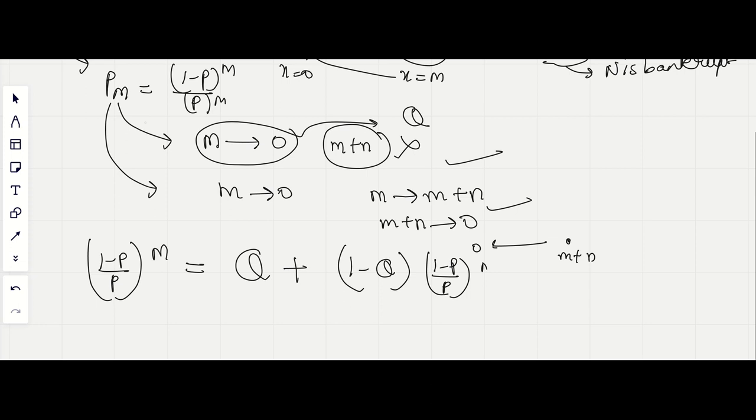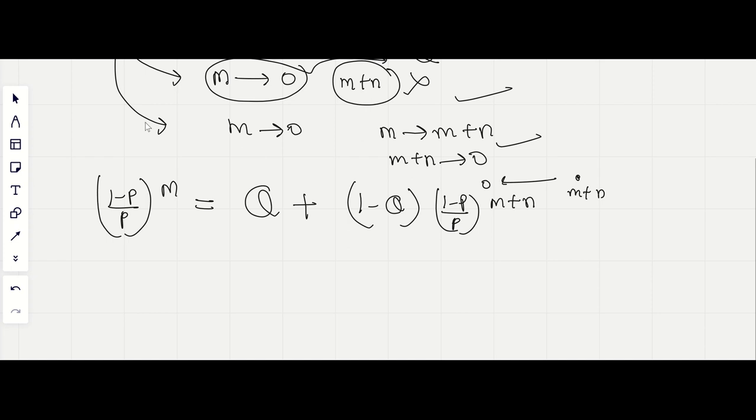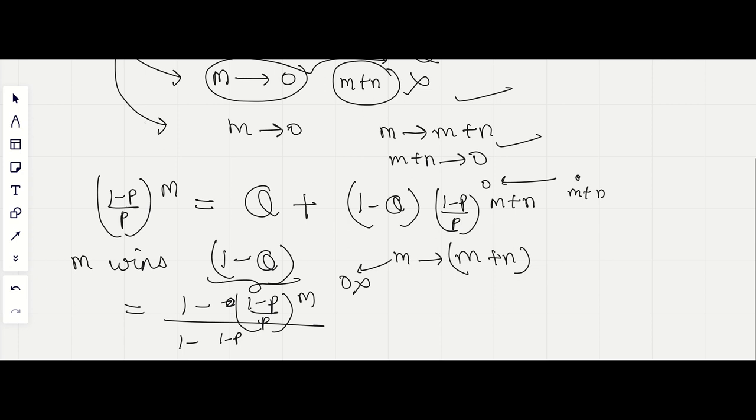Now in this question, we need to calculate that M wins. That is, the probability 1 minus Q. That is, M goes from m to m plus n and he doesn't go to 0. This would be equal to [1 - ((1-P)/P)^m] / [1 - ((1-P)/P)^(m+n)] after solving this equation.